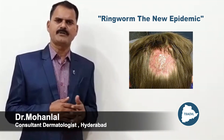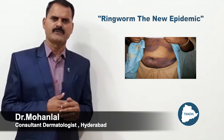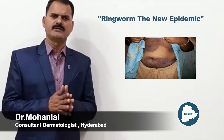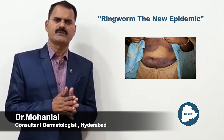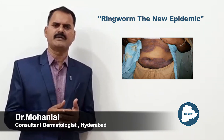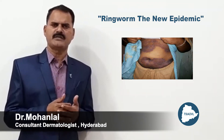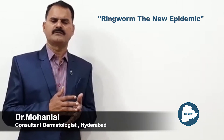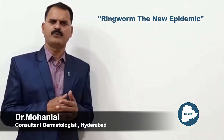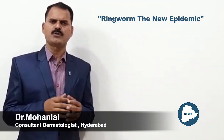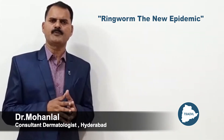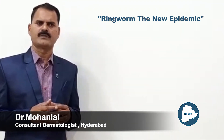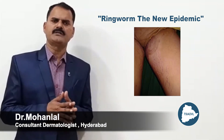Tinea Capitis is commonly seen in children. There is also Tinea Incognito. Tinea Incognito is Tinea treated with other ailments like steroids or in combination creams — steroids, antibiotics and antifungals. These combination creams are available in medical shops. Rural people usually approach their local doctor or directly go to the medical shop and buy these creams and apply over the Tinea.